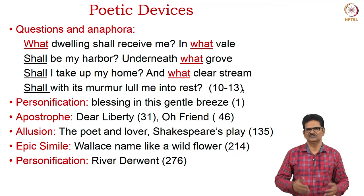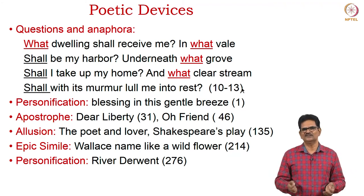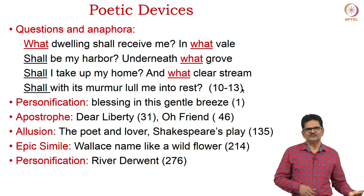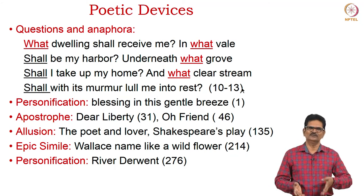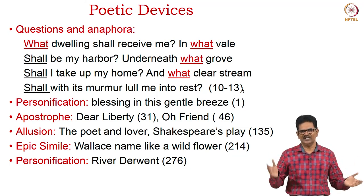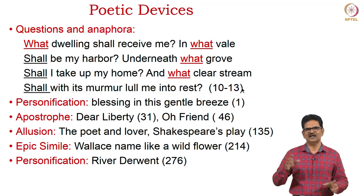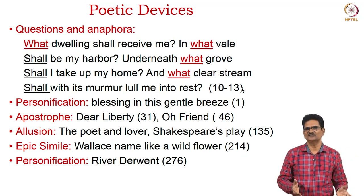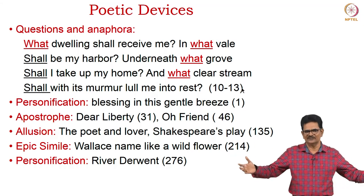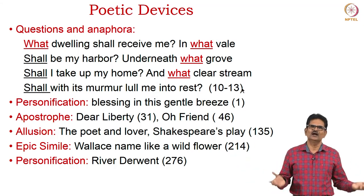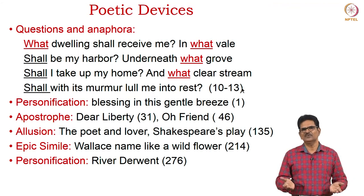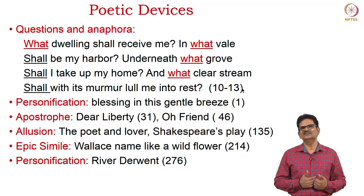When it comes to personification, the gentle breeze is considered to be a human or divine being which blesses Wordsworth. We also have apostrophe in many places — he addresses his friend and also liberty directly. There is allusion to Shakespeare's play where we have the comparison between the poet and the lover. We have the simile of how William Wallace spread like a wildflower throughout his country, remembered even today. And lastly, we saw the personification of River Derwent — like a mother, it taught many things to Wordsworth.